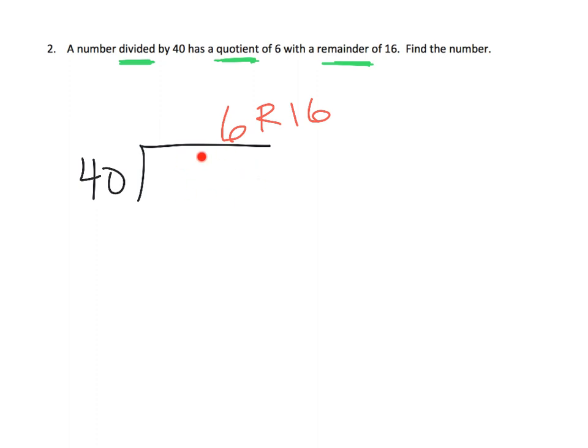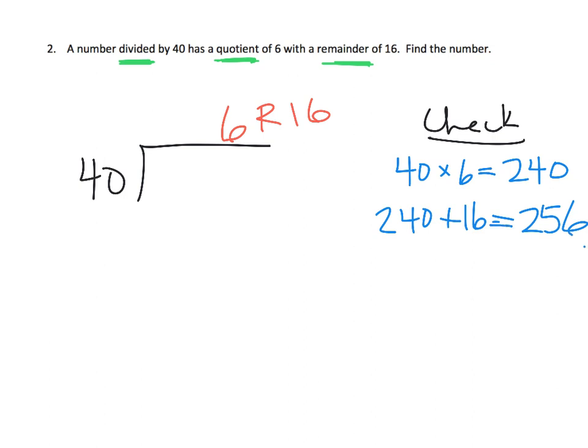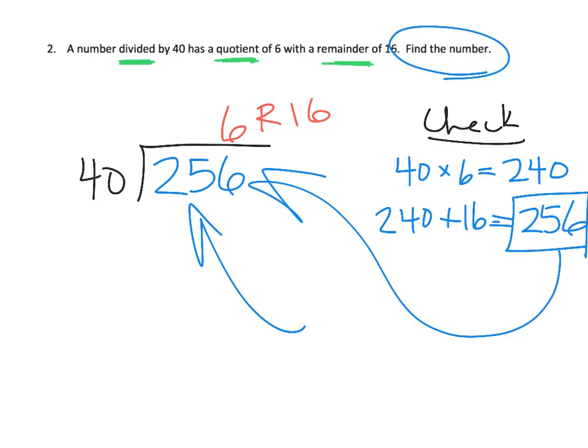Now what we're supposed to do is figure out what number goes in here. The way we could find that out is we can multiply, kind of like checking the answer. What would we do? Well, we would take the 6 and the 40 and multiply them. 40 × 6 is 240. Then we take that 240, add in our 16 remainder, and we get 256. That is what would go in the house. So that number is 256.